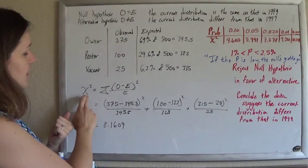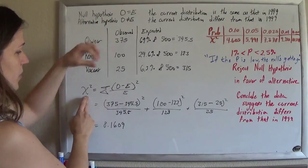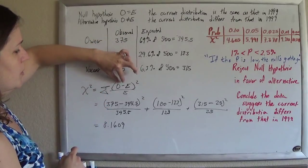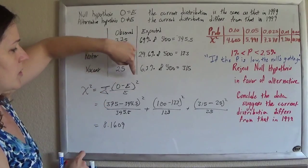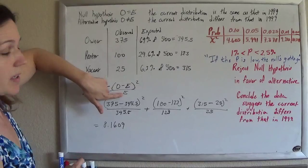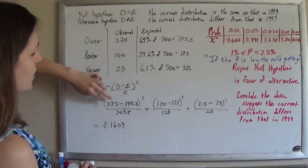And then our test statistic is this chi-square test statistic, where you just take the sum of all the observed minus the expected values, square that, divide it by the expected values, sum them all up.